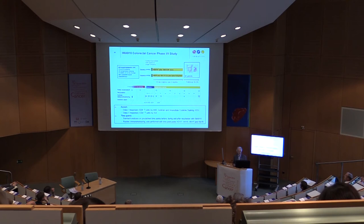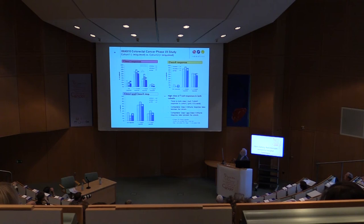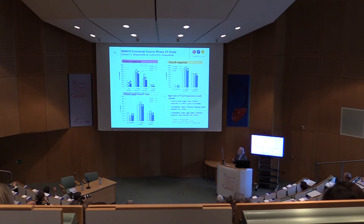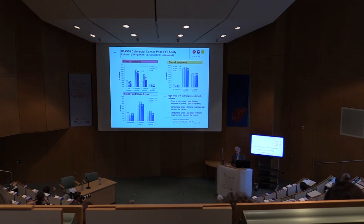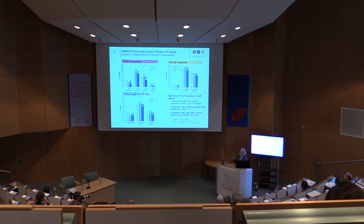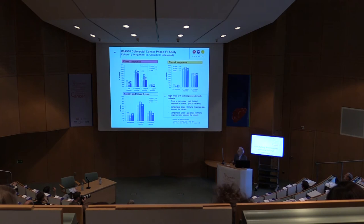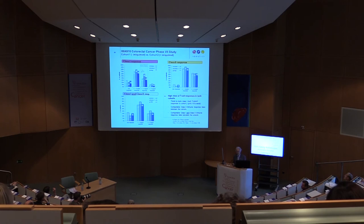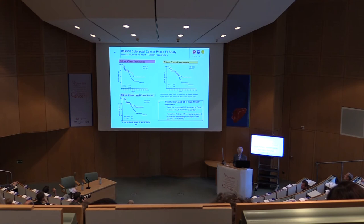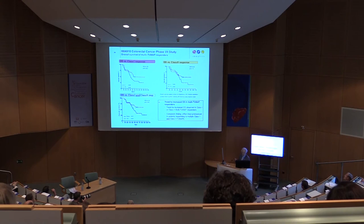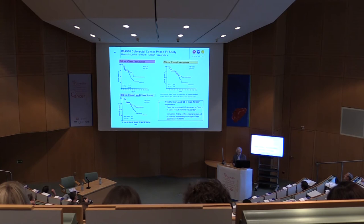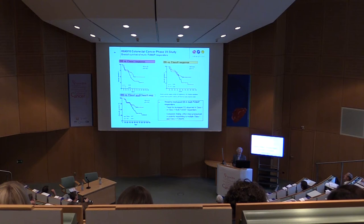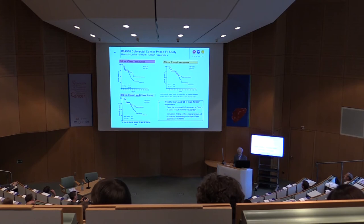Immune monitoring was done in a very detailed fashion. We found T-cell responses in most patients, recognizing one, two, or even three or more of these peptides out of the list of 13. This was also true for the three CD4 peptides, with most patients responding. The majority of patients recognized both class 1 and class 2 peptides, with a slight advantage for the cohort receiving Imiquimod, a TLR7 ligand. Importantly, there was a tendency that patients with a better immune response showed a trend for increased overall survival — a better immune response against these peptides correlated with better survival.